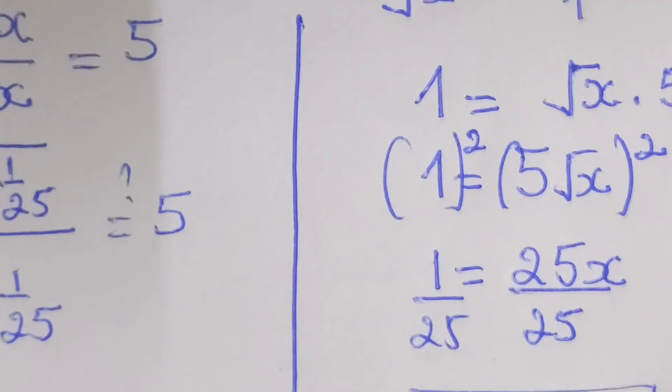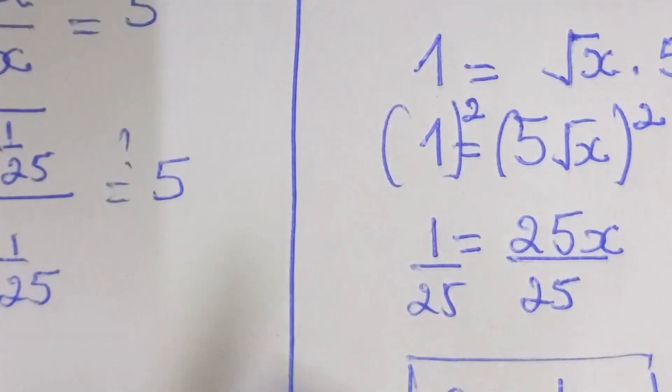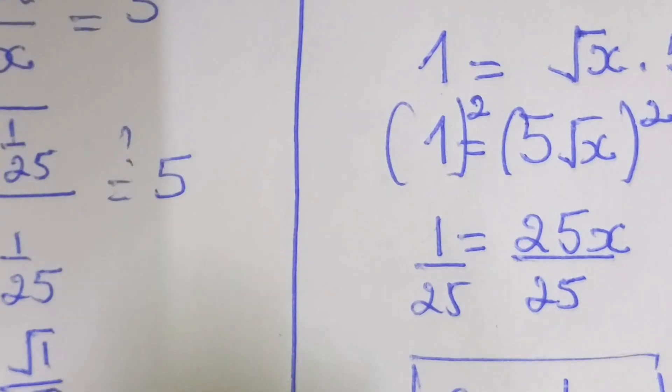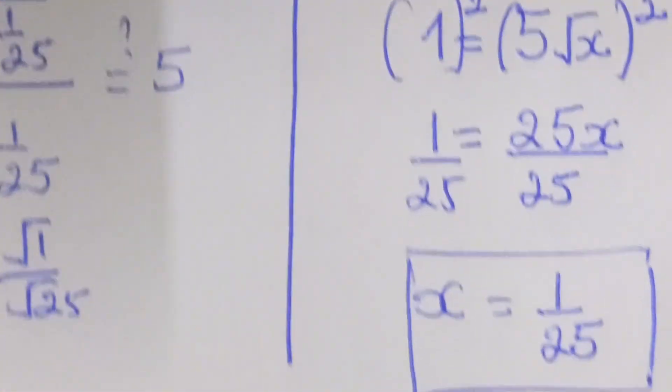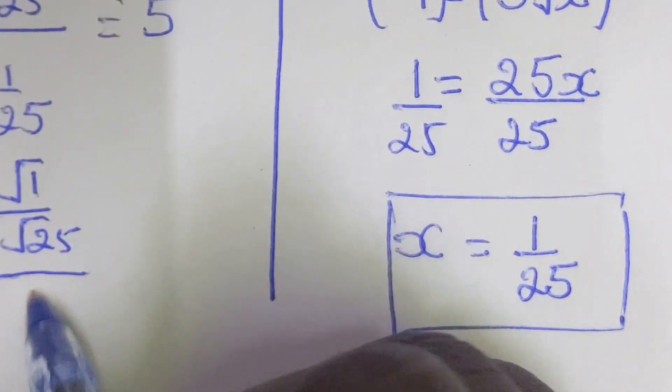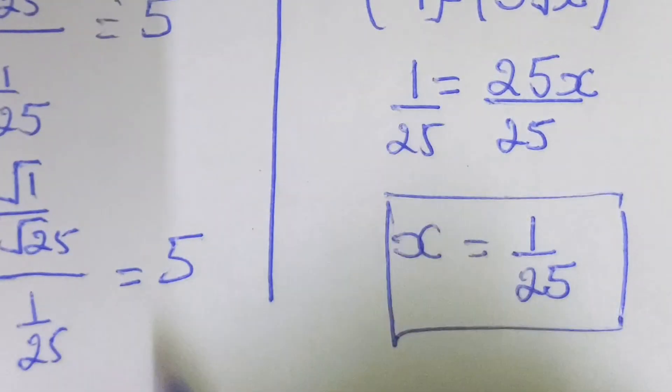And then right here we are going to separate this one inside square root to get square root of 1 over square root of 25, then after over 1 over 25 equal to 5.